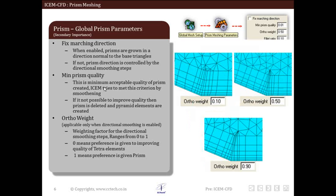As you can see in the figure, this shows the smoothing operation performed with different values of ortho weight. For 0.1 it is given like this, for 0.5 it grows like this, whereas for 0.9 which means we are giving preference to quality of prism elements it grows like this. We see the best quality of prism elements in this particular figure compared to these.